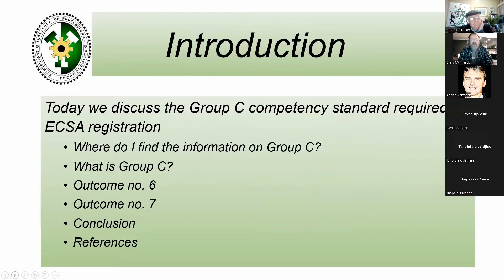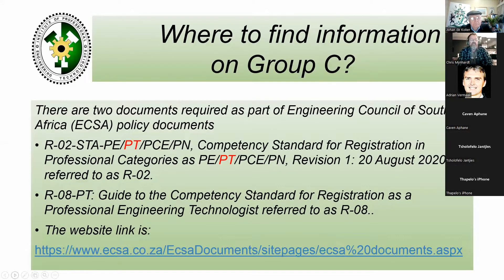Some people already know where to find this information, but for those who don't: the first question is where do I find the information on Group C? What is Group C? What is Outcome 6? What is Outcome 7? We'll cover all of that. There are two key documents required as part of Engineering Council policy documents.